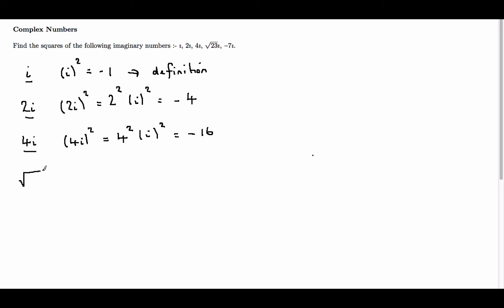We have root 23 times i, so root 23 times i all squared is root 23 squared times i squared.